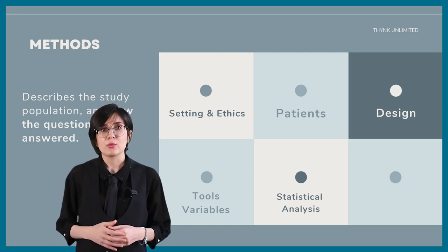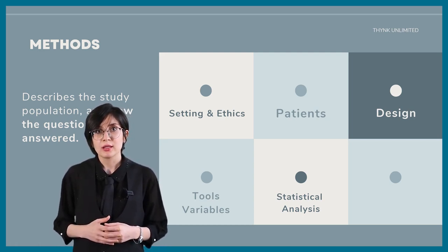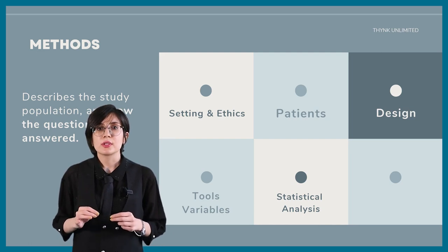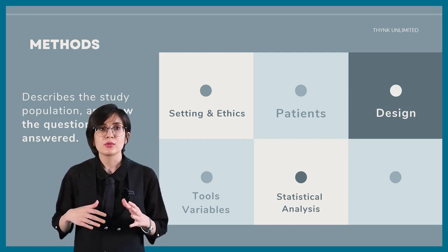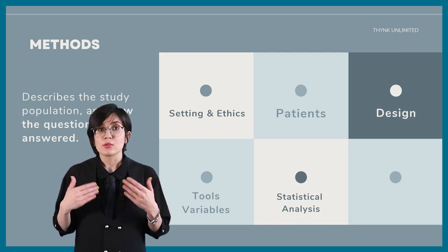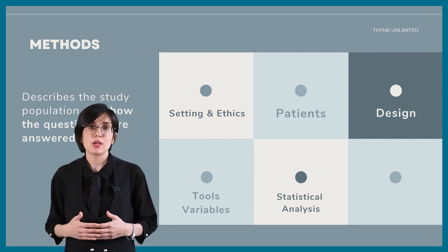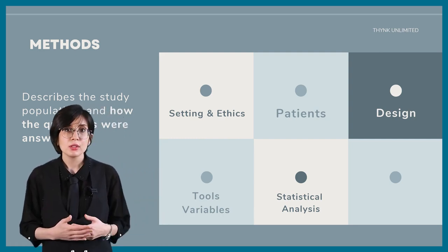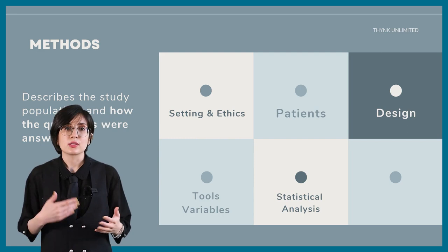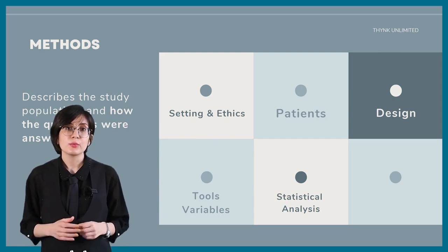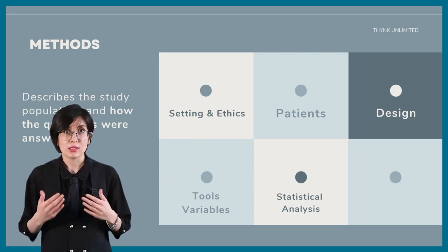Next is the patient or population subheading. Detailing the size of the sample size and how you determine it, your enrollment process, the diagnosis criteria if applicable, the inclusion and exclusion criteria, the number of people eliminated and the reasons why.